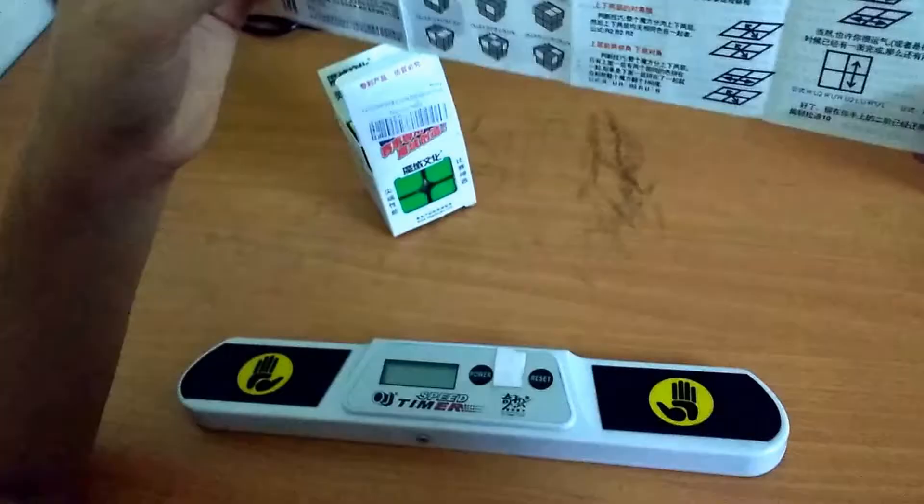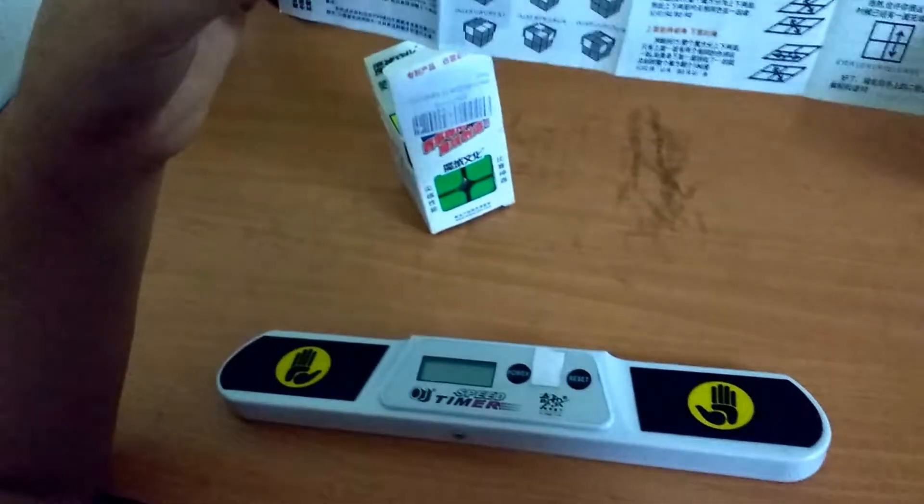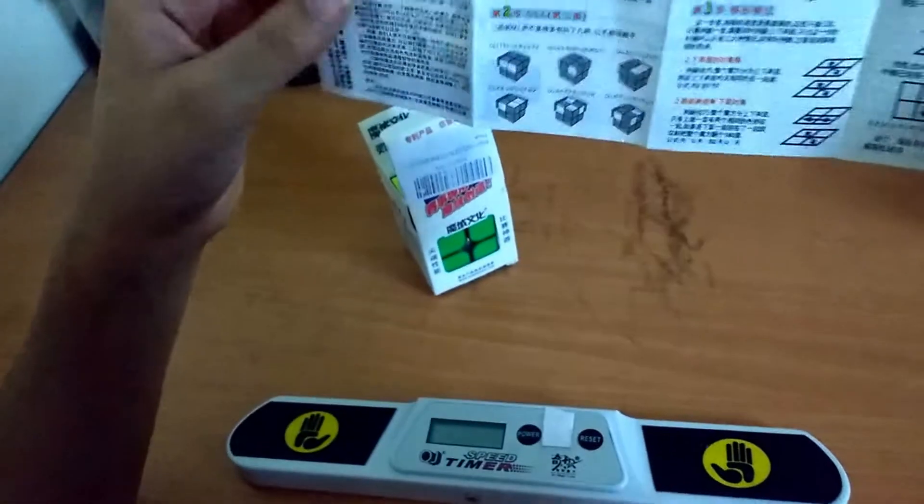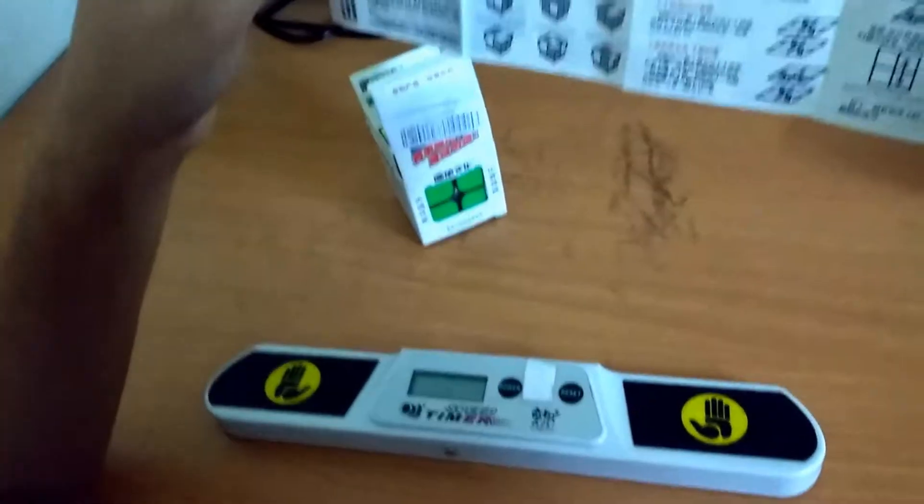But it gives you the algorithms in English. So if you know how to solve a 3x3 or you know the basic algorithmic notation, then you should be able to get how to solve the 2x2 using this.